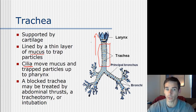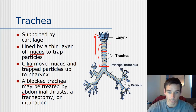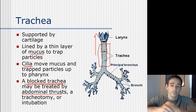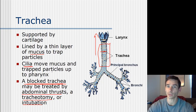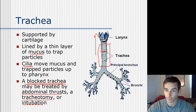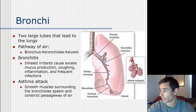A blocked trachea means you are choking - food has gotten all the way into the trachea, requiring someone to perform abdominal thrusts to force it out. Alternatively, a tracheotomy involves creating another hole below the blockage so you can breathe through it - if food is blocking here, a hole is made in the trachea below so you can still inhale and exhale.